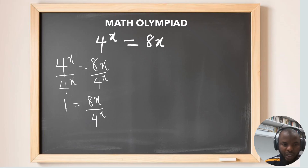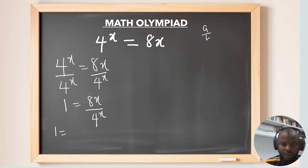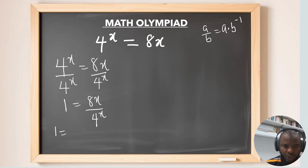We have 1 equals — and here I'll use the fact that a over b is the same thing as a times b to the power of negative 1. So this becomes 8x multiplied by 4 to the power of negative x.